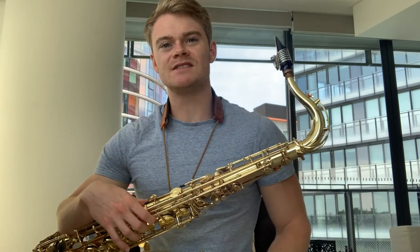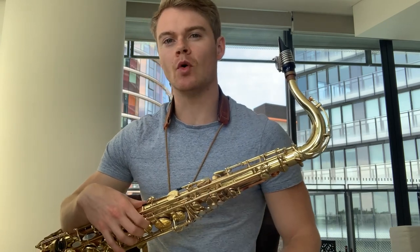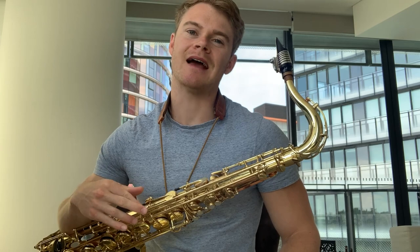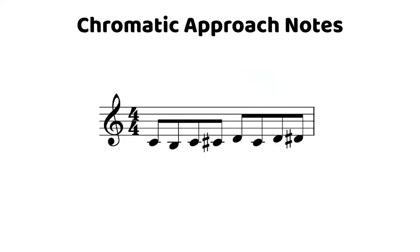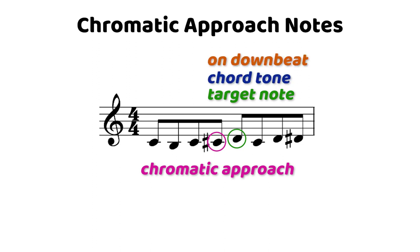Now, before we jump into these phrases, it's important to know what chromatic approach notes and enclosures are and how they are used. Chromatic approach notes do exactly what the name suggests — they chromatically approach a target note. Generally, this target note is going to be a chord tone that lies on a downbeat.